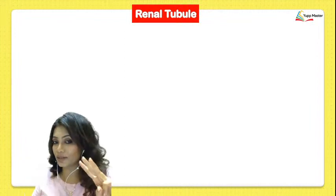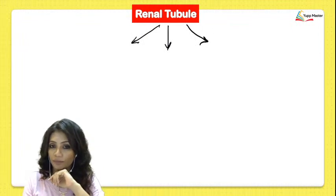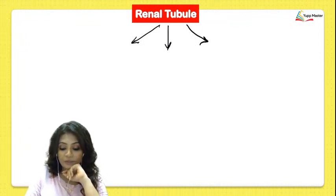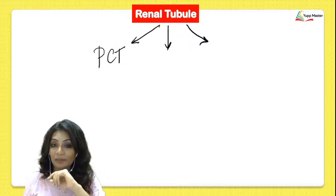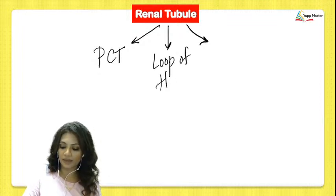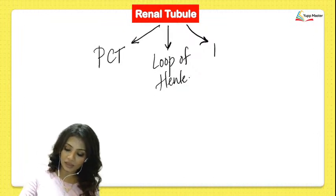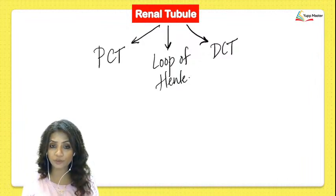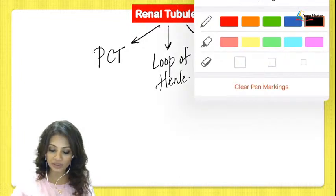After the glomerulus we move on to the renal tubule. The renal tubule had three parts: the PCT (proximal convoluted tubule), the loop of Henle, and the DCT (distal convoluted tubule). Let's now study what these tubules are internally lined with.